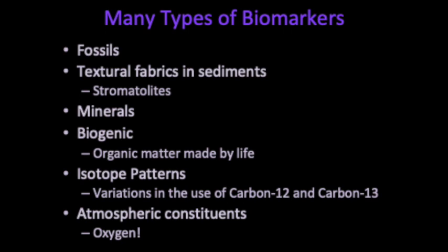There are also isotope patterns, such as variations in the use of carbon-12 and carbon-13. Carbon-13 has one extra neutron, meaning that it takes a little bit more energy for life to break the extra bond to use it. Therefore, life typically shows a preference for carbon-12, and by examining the relative abundance of carbon-12 and carbon-13, we can get an idea of whether life was present.